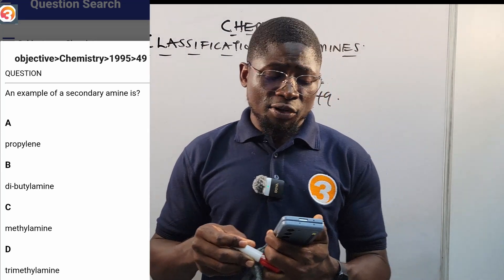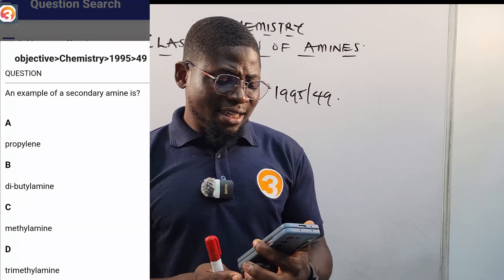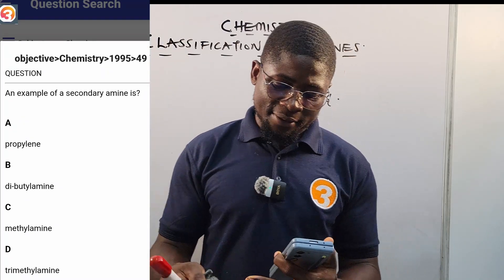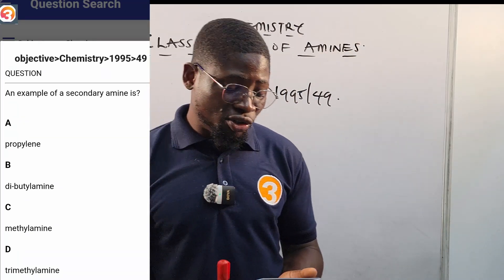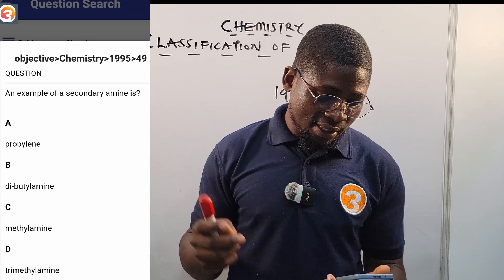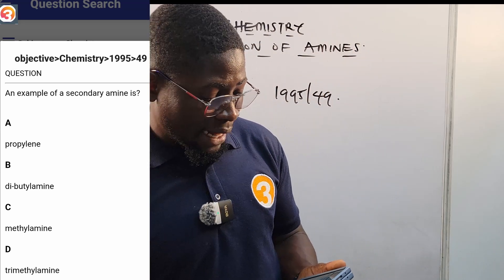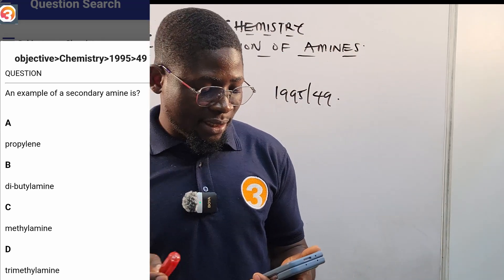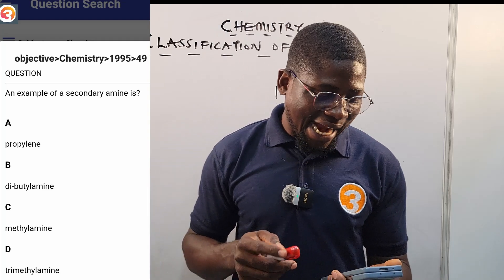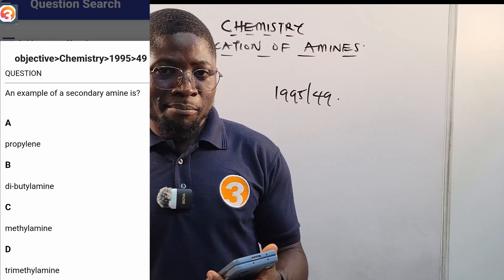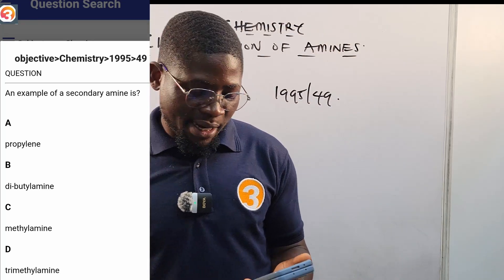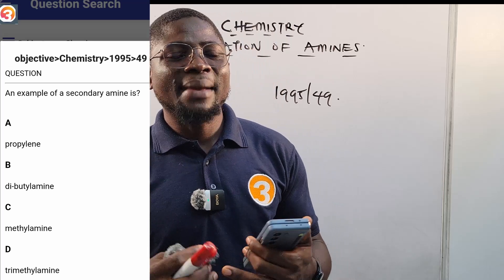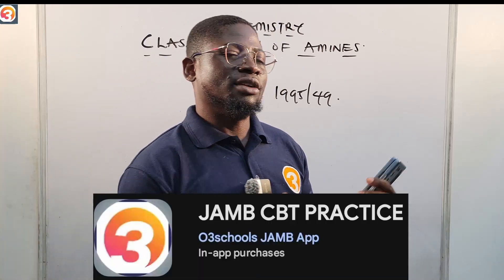The question is being displayed on your screen right now. They say: an example of a secondary amine is — A: propylene, B: dibutylamine, C: methylamine, D: trimethylamine.